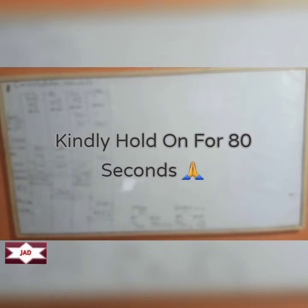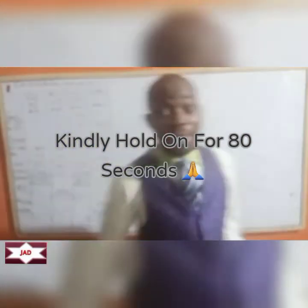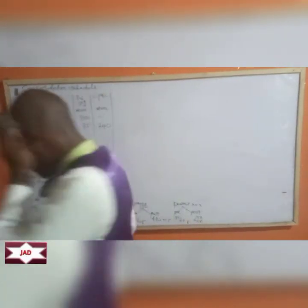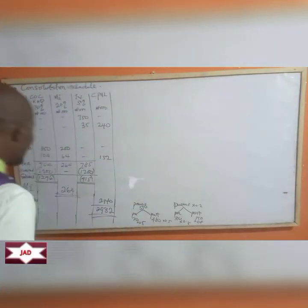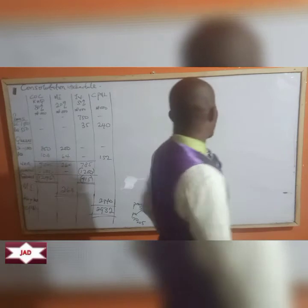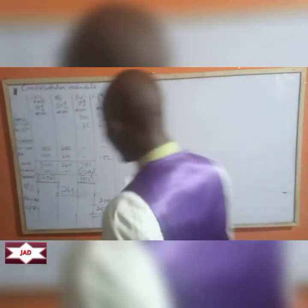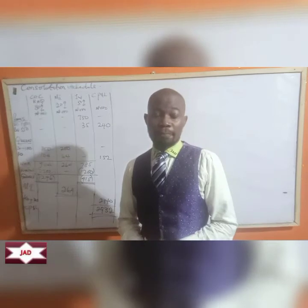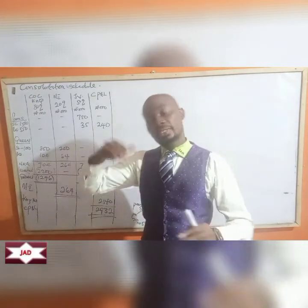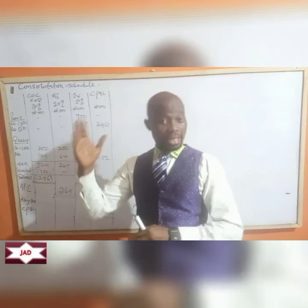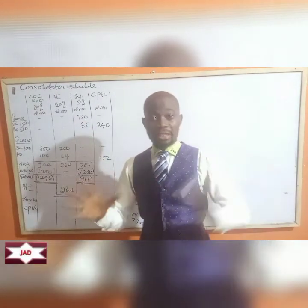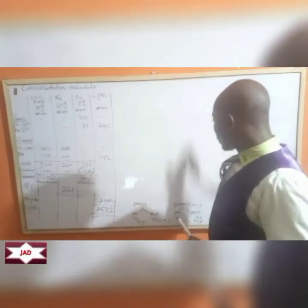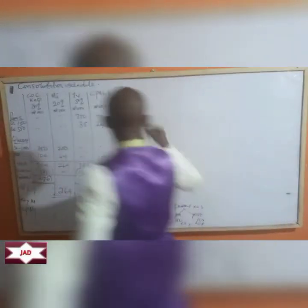So what we've done here is prepare the consolidation schedule to show the subsidiary and the joint venture arrangement. With this, you can prepare the consolidated balance sheet. There are two methods: line by line and separate line. Let's do the first one — the similar line method.